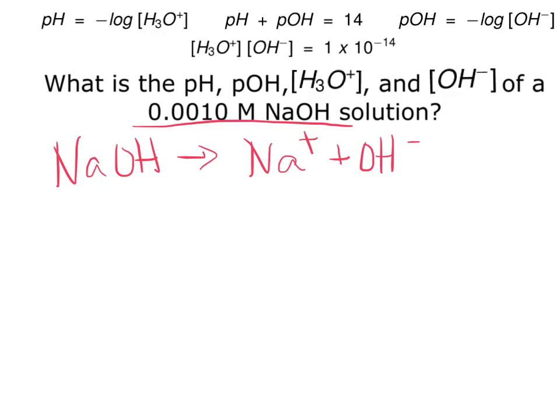NaOH will completely dissolve in water to make Na+ and OH-. So if my NaOH is 0.001, my Na+ is 0.001, my OH- is 0.001, and I've already got one of my solutions. Ta-da!